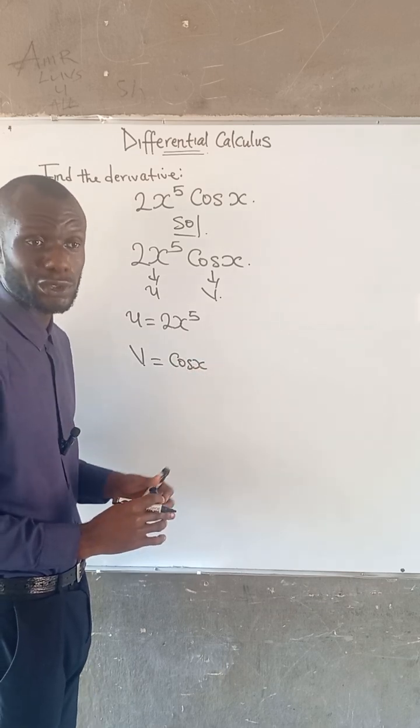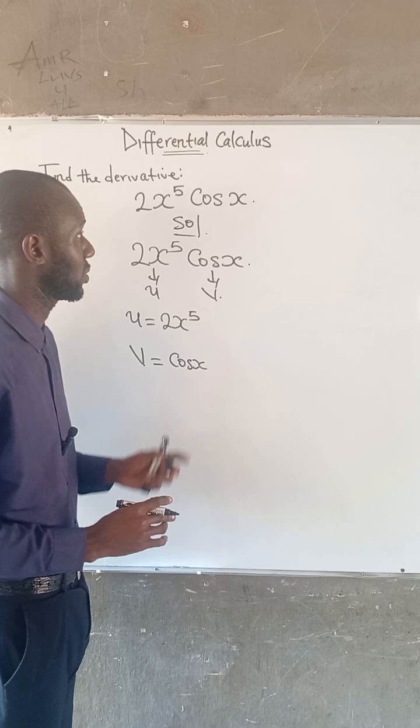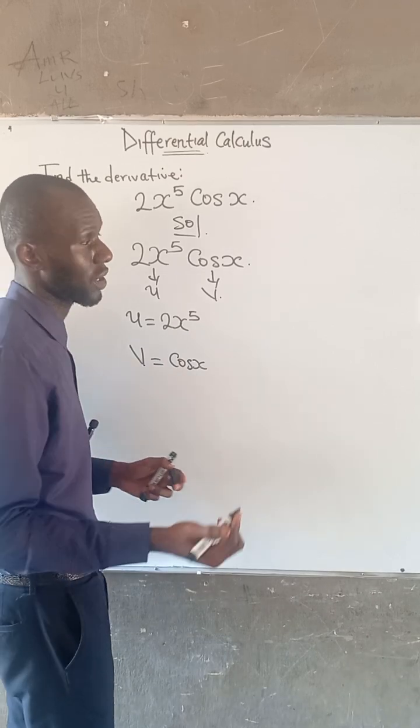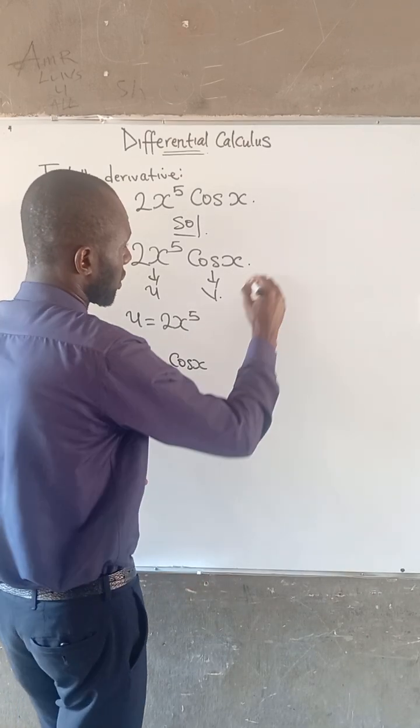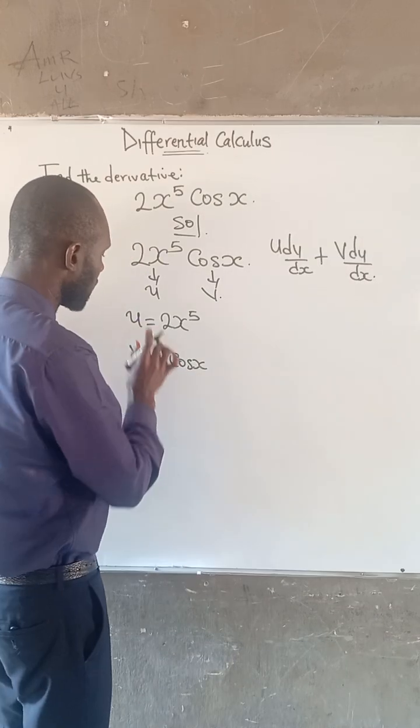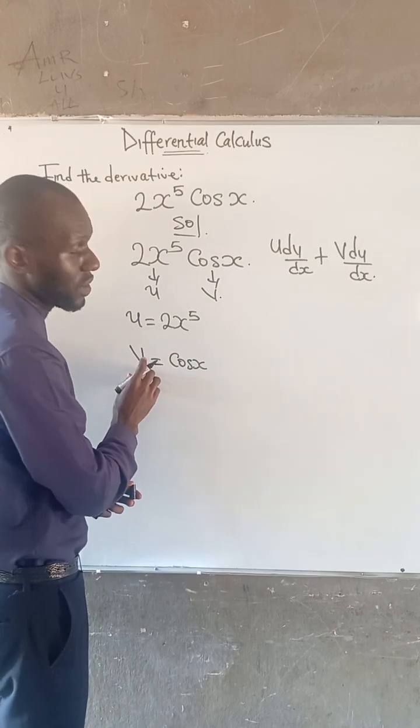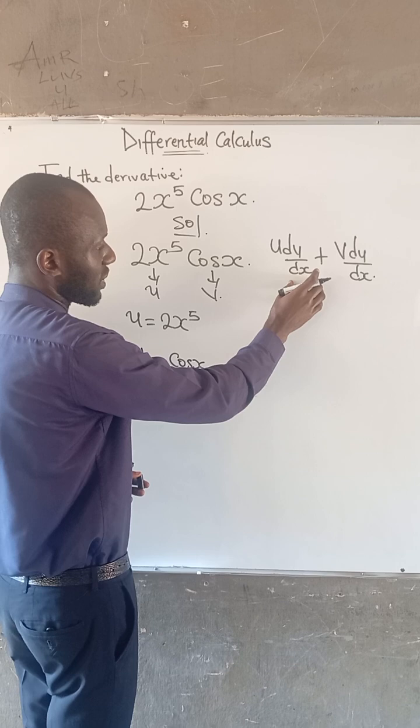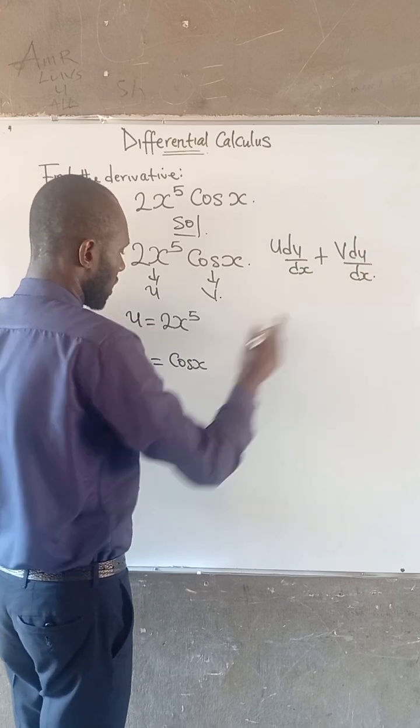Now, we are going to use the product rule to differentiate this function. Recall that the product rule is given as u dv/dx plus v du/dx. So at this point, we have u, we have v, so we have to obtain dv/dx and du/dx.